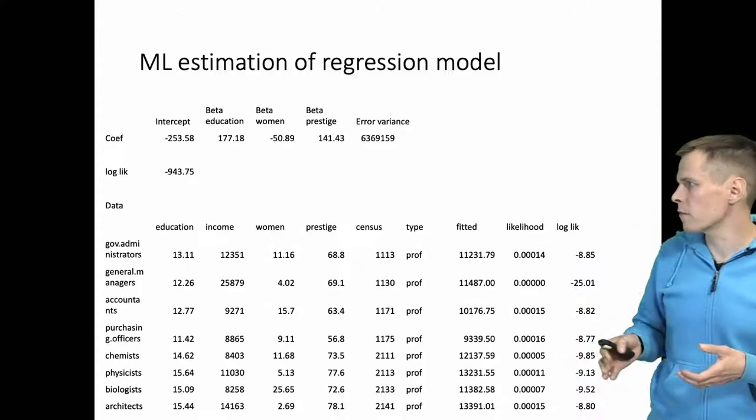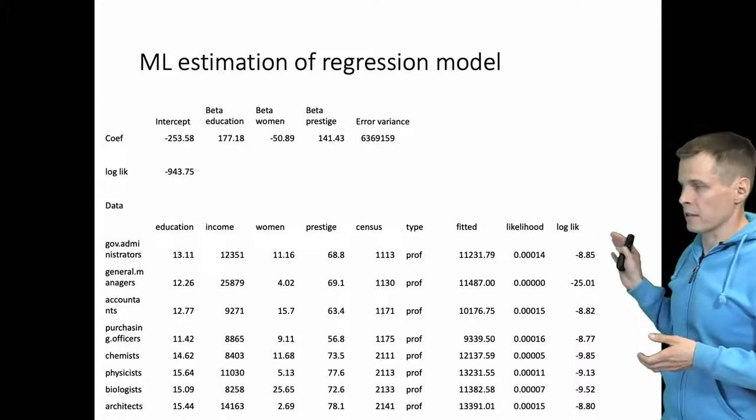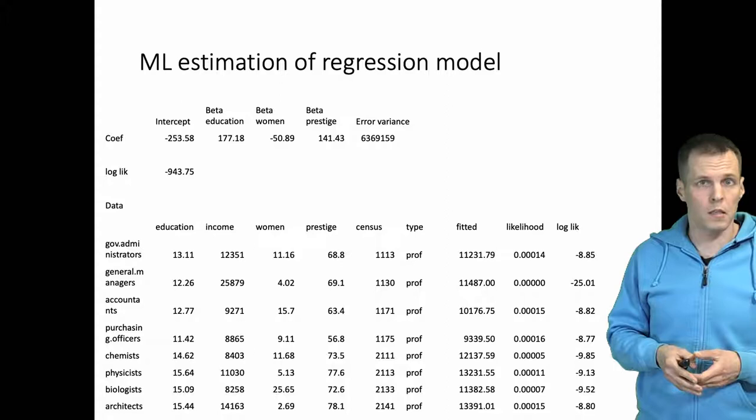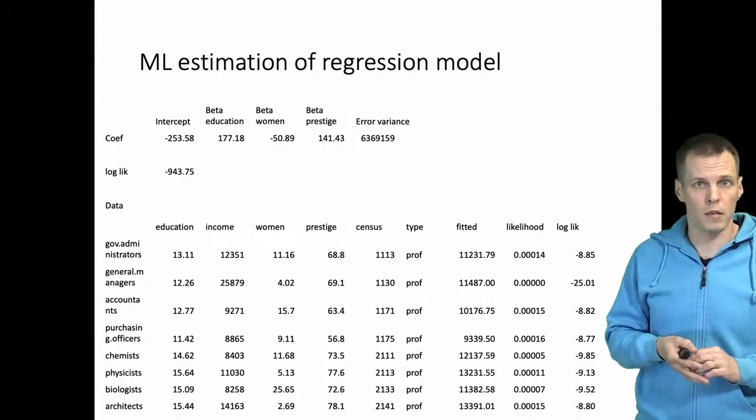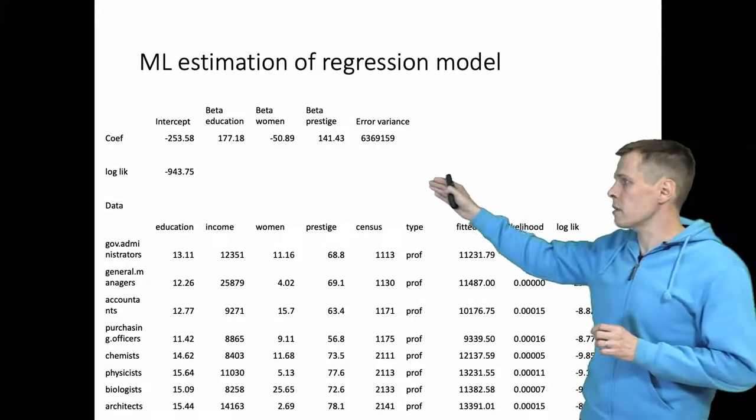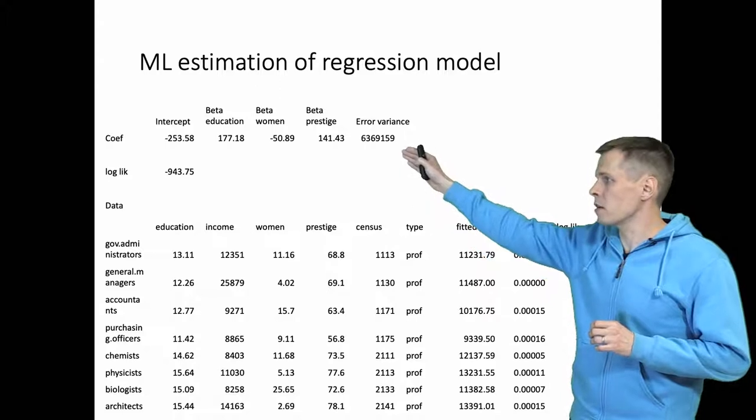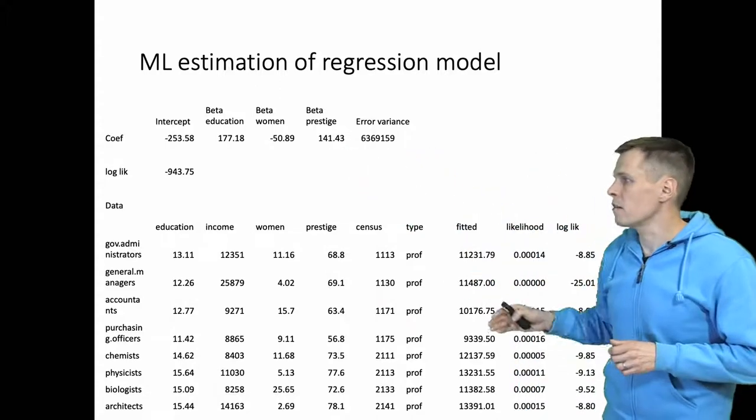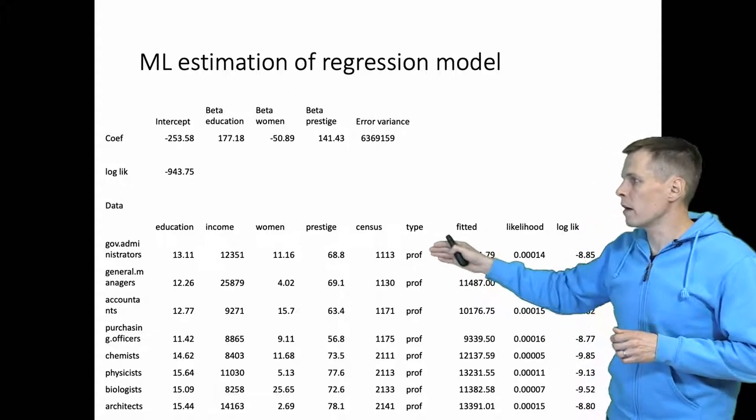On my courses I have the students complete this kind of Excel sheet and estimate maximum likelihood estimates using Excel's optimizer. The estimates are here, so we have the error variance and then we have the regression coefficients betas. Here is our data we are using education,